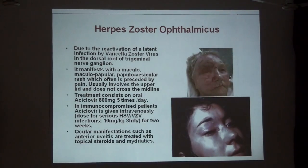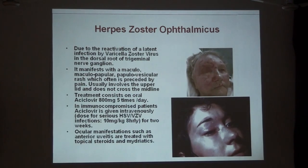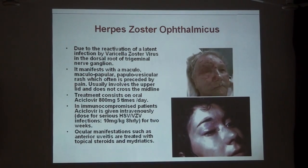Herpes zoster ophthalmicus — though it can be present in other immunodeficient conditions, the association of herpes zoster with HIV is very high. This is due to reactivation of latent infection by varicella-zoster virus in the dorsal root ganglion of the trigeminal nerve. It can manifest as macular, maculopapular, or papulovesicular rashes, preceded by dermatomal pain. Usually it involves the upper lid. If the tip of the nose is affected, the eyes are usually involved because of common supply by the nasociliary branch of the ophthalmic division of the trigeminal nerve.